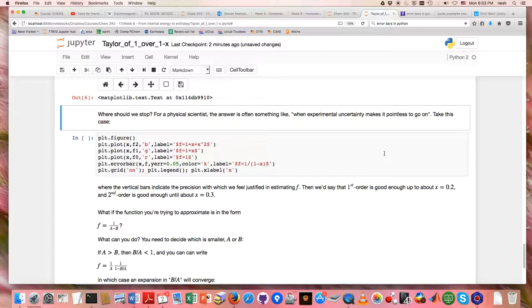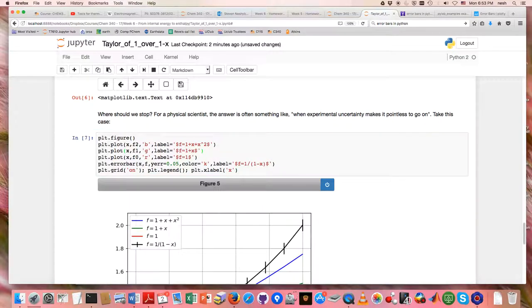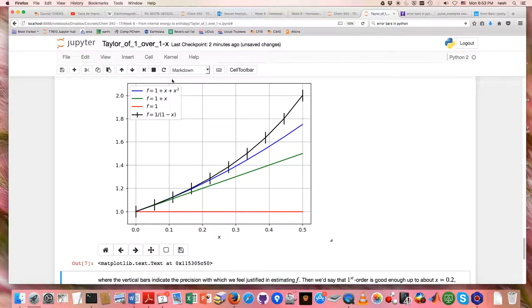But where should we stop from a practical standpoint? For a physical scientist, the answer is often something like when experimental uncertainty makes it pointless to go on. So let's suppose we had some uncertainty in the value of our predicting this function, 1 over 1 minus x.